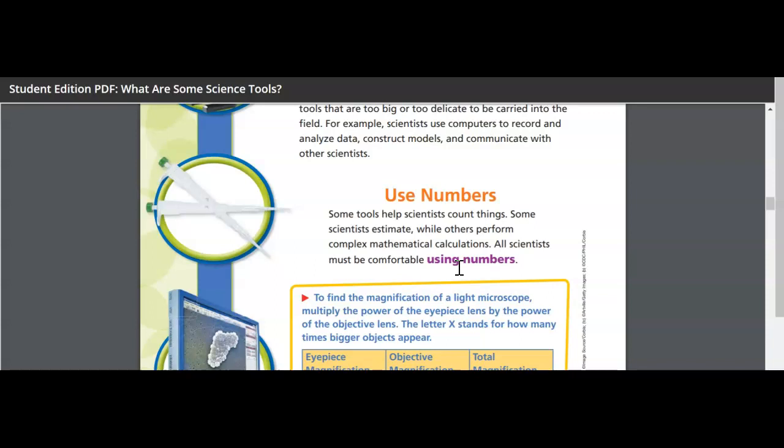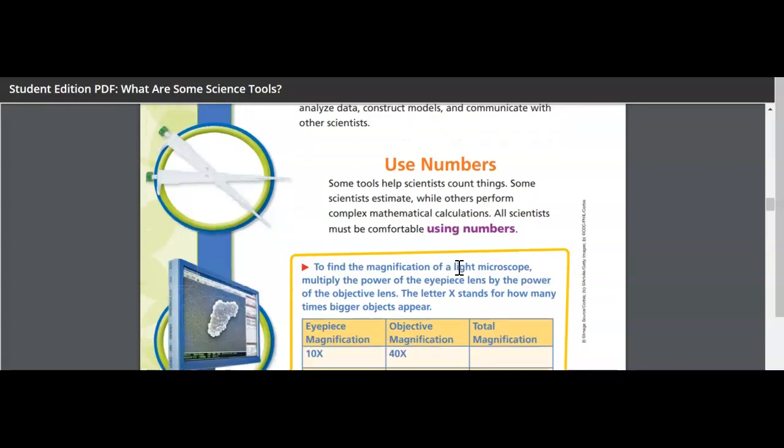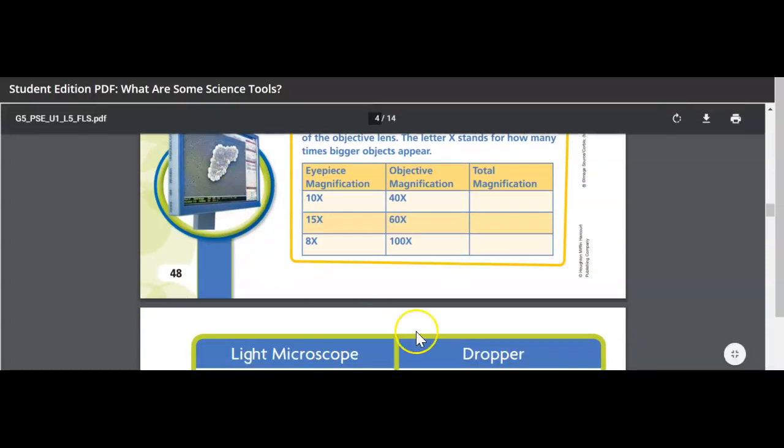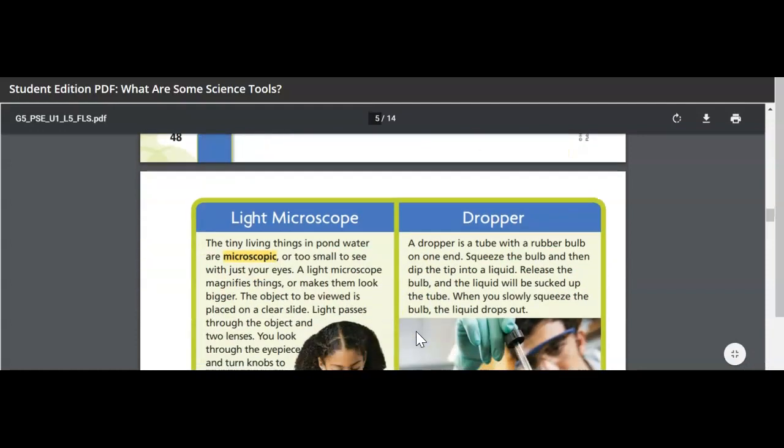Some tools help scientists use numbers. Some tools help scientists count things. Some scientists estimate, while others perform complex mathematical calculations. All scientists must be comfortable using numbers. We talked about that last time when we talked about data. And then there's a computer monitor there.